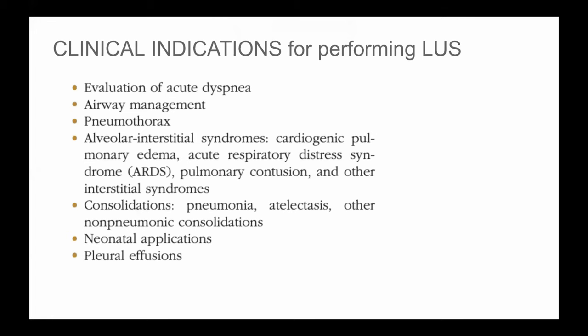The clinical indications for performing lung ultrasound are to evaluate acute shortness of breath, whether in the ICU or the ER. It can also be used to see if the endotracheal tube is in the trachea. Common causes of shortness of breath like pneumothorax, alveolar interstitial syndrome, consolidations, and pleural effusions can all be diagnosed and characterized on ultrasound.